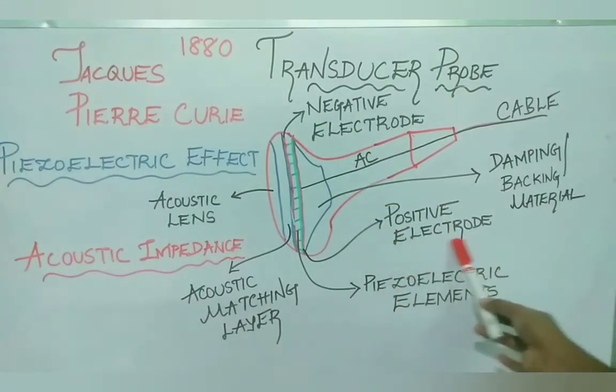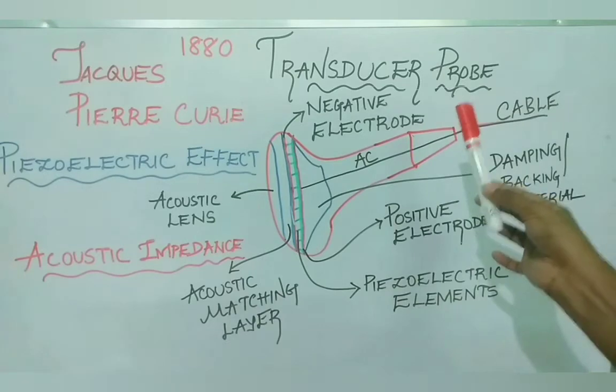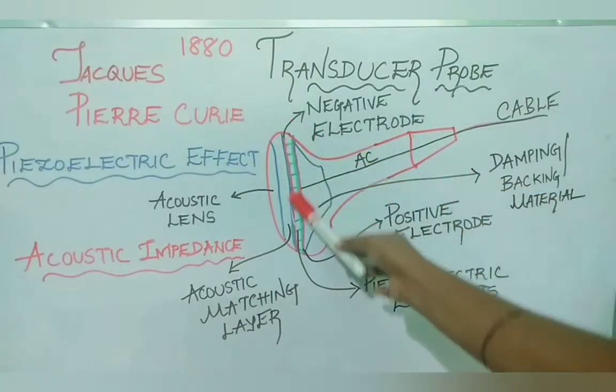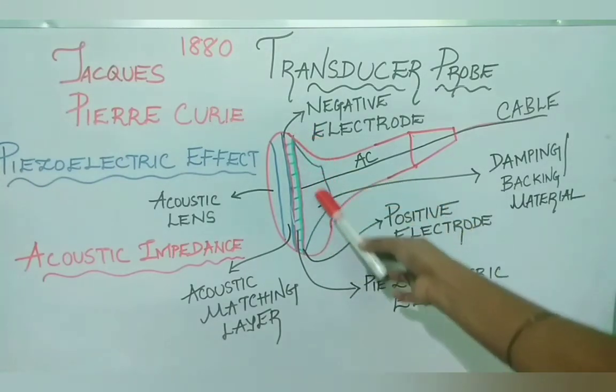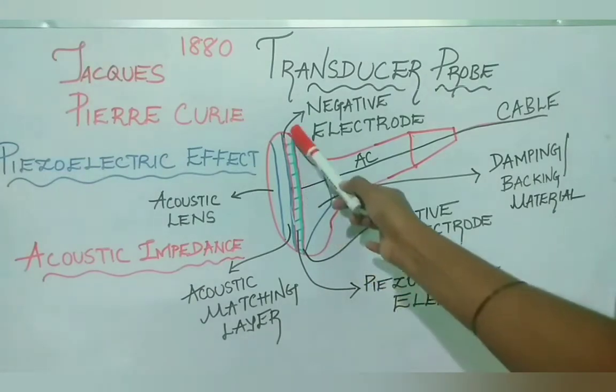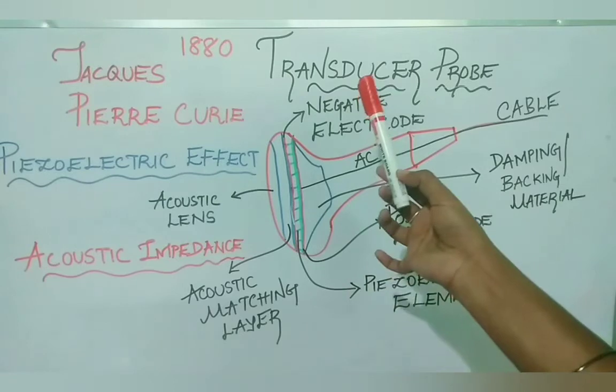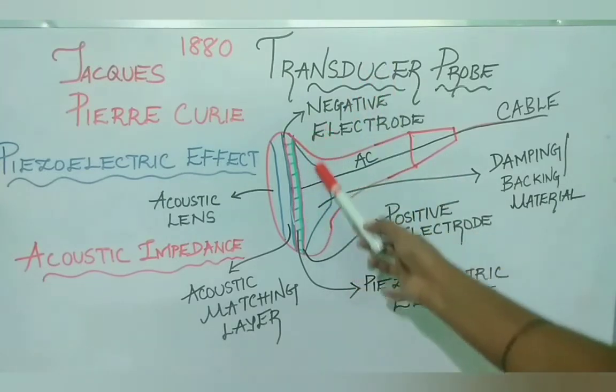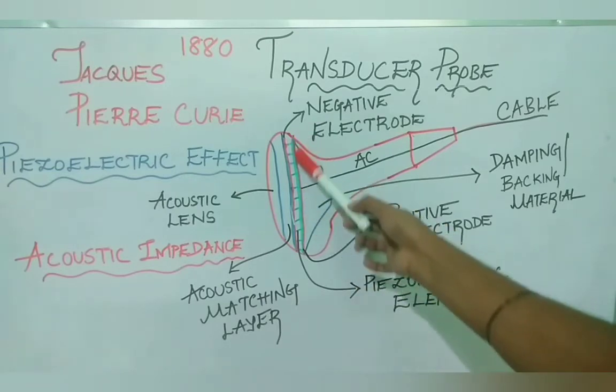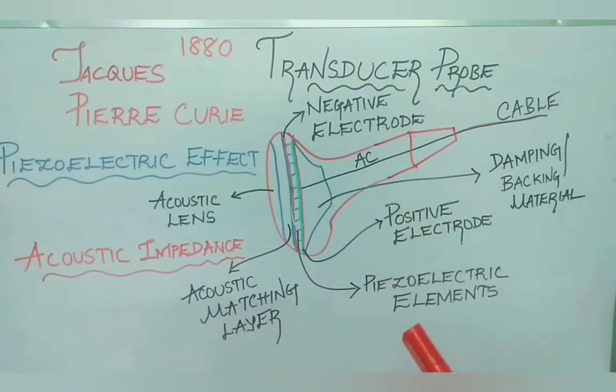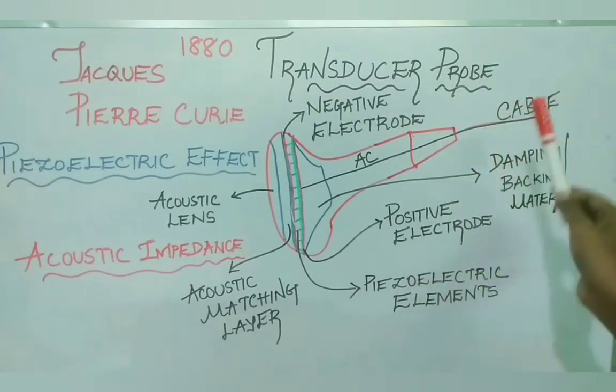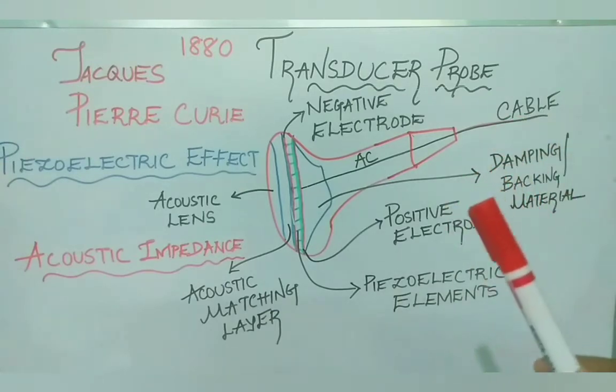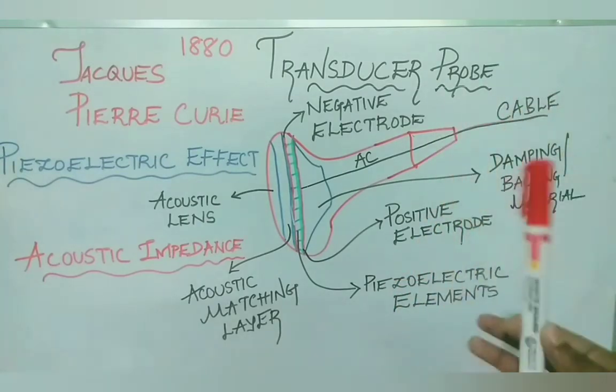Negative as well as positive electrodes are for electrical connection. Damping material is adhered to the back of the piezoelectric elements or crystals, behind the positive electrode. It is made up of plastic or epoxy resin mixed with tungsten filaments. The role of damping or backing material is to limit the duration of vibration of piezoelectric crystals or elements.